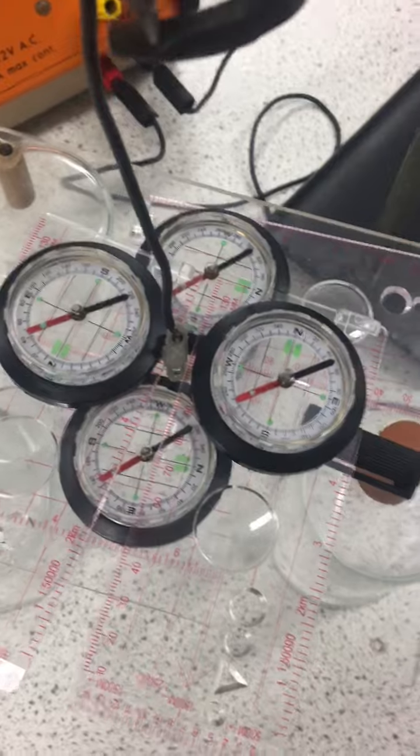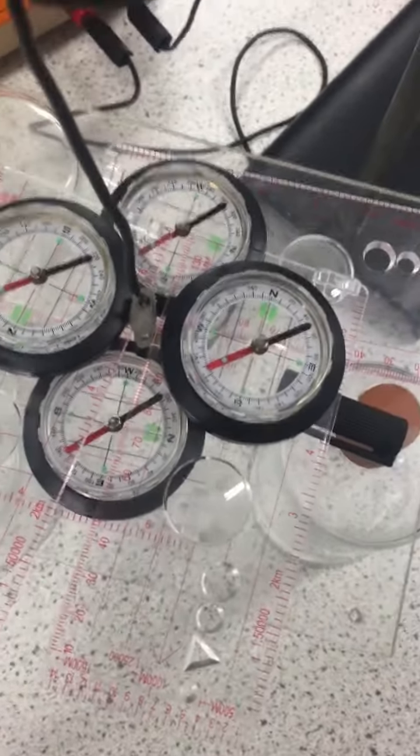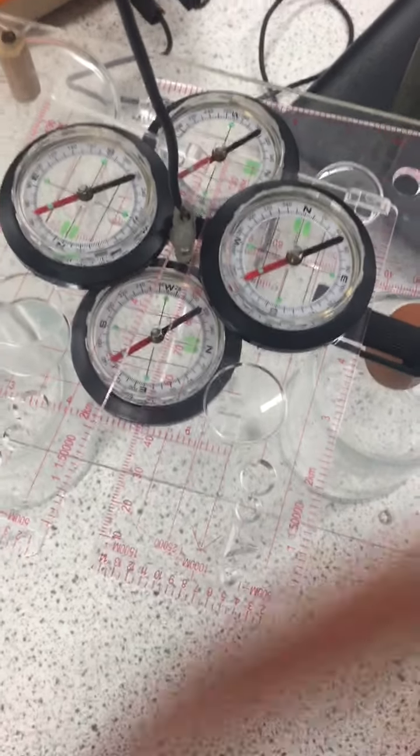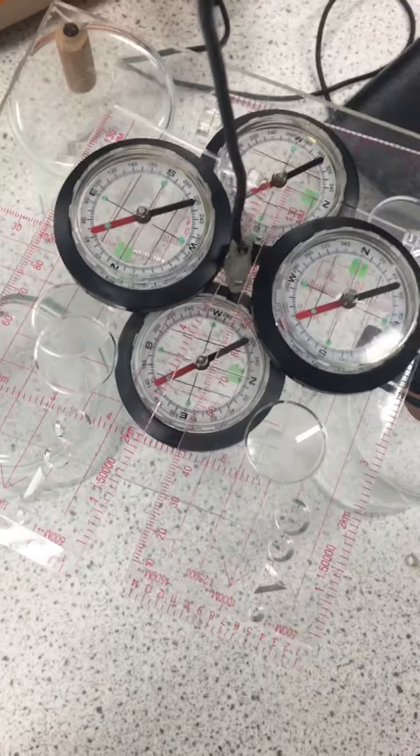On the perspex sheet, I've got four compasses. Now what these do is they point to magnetic north because they align with magnetic field lines. So at the moment, they're all pointing the same way because of the earth's magnetic field.